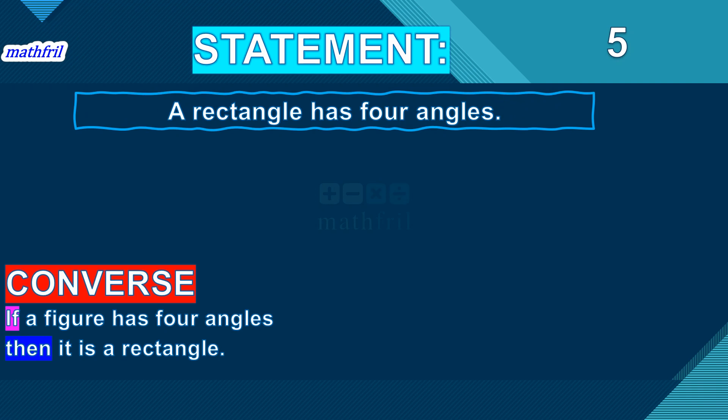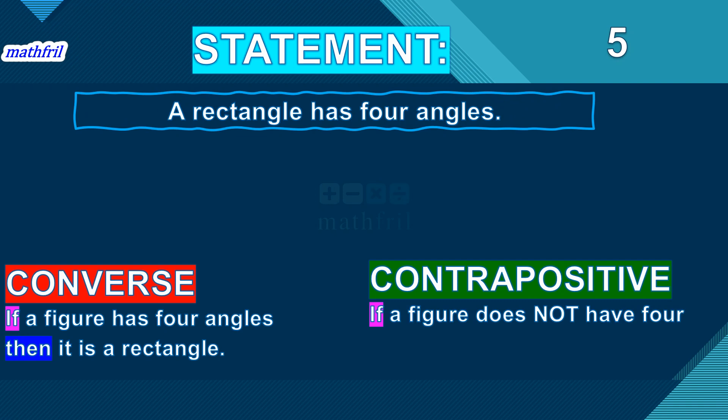So, there are a lot of four angles. And it's not always true that it is a rectangle only. The contrapositive of this: if a figure does not have four angles, then it is not a rectangle. It is also a false statement. But, this is how it goes as the converse and the contrapositive statements are concerned.